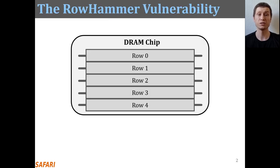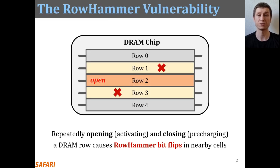The rowhammer vulnerability of modern DRAM is a critical reliability and security threat. When a DRAM row is repeatedly activated and pre-charged many times, nearby rows may experience rowhammer bit flips.